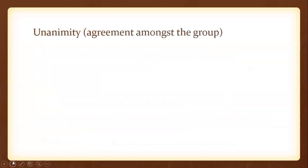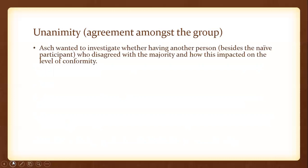Another variation that Asch did was unanimity. Unanimity means agreement amongst the group or agreement amongst others. If we have agreement amongst everybody, it's unanimous — so we get unanimity. In his original study, all of the confederates were in agreement; they had unanimity and were unanimous in what they were saying.